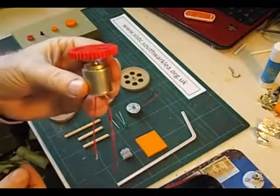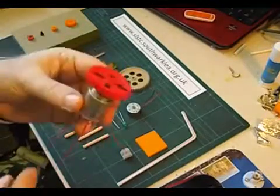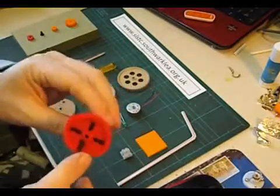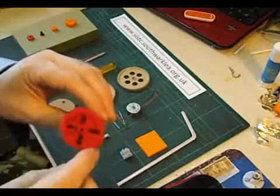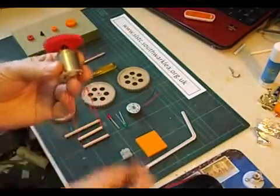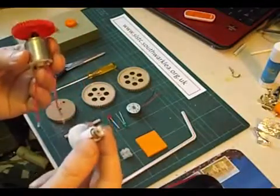In effect, you've turned it into a dynamo or a generator. The problem is that with these small motors, the amount of electricity produced is very small, so you have to turn it extremely quickly to get any meaningful amounts of electricity. If you want to make a light bulb light up, you have to turn it extremely quickly.